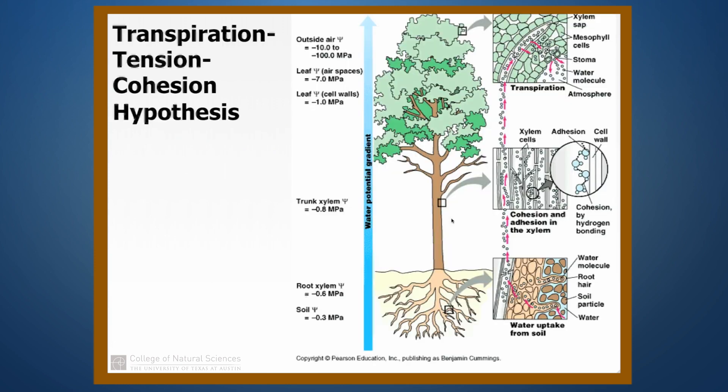We finished last time talking about how water could be put under very strong negative pressure potentials, and the best evidence suggests that this is how trees are moving water to the tops of their bodies. Here's how it works. Let's start over here on the left side of the slide and just look at the pressure potentials that we have at different points in the body of the plant.